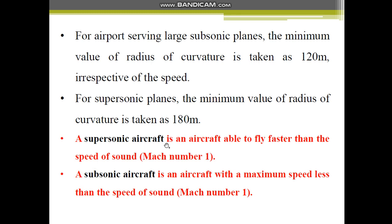First of all, what is a supersonic aircraft? A supersonic aircraft is an aircraft which is able to fly faster than the speed of sound. A subsonic aircraft is an aircraft with a maximum speed less than the speed of sound. For airports serving large subsonic planes, the minimum value of radius of curvature is taken as 120m irrespective of the speed. For supersonic planes, the minimum value of radius of curvature is taken as 180m. These values you are supposed to remember.